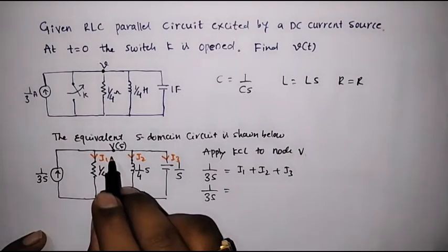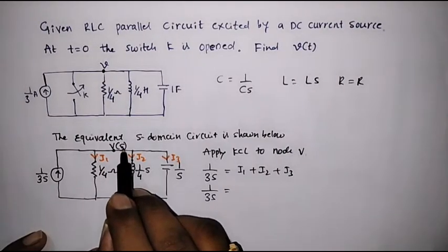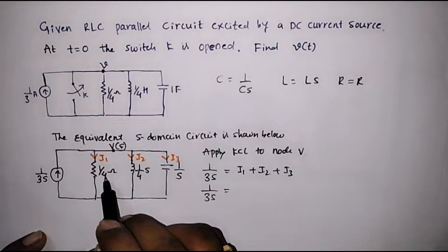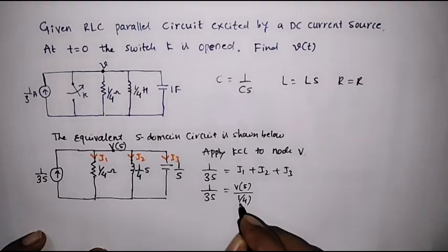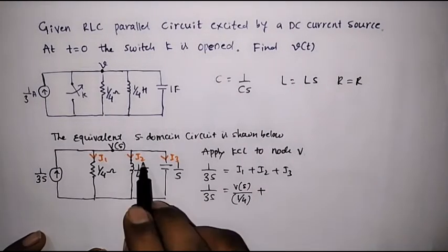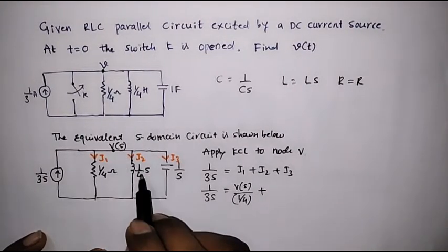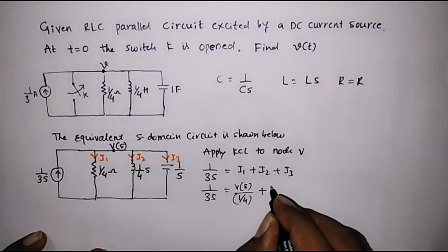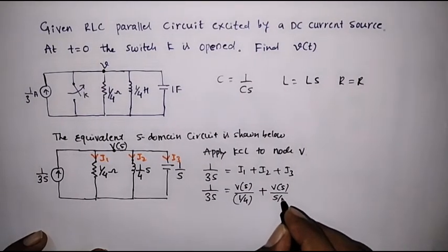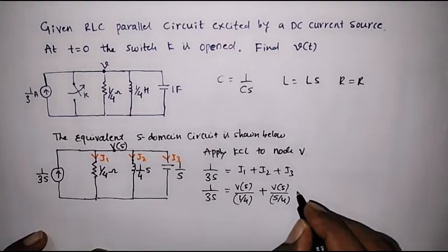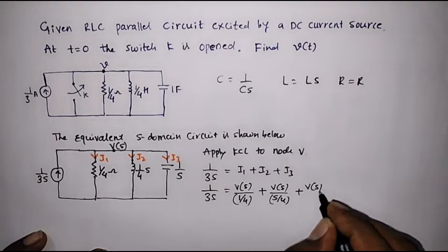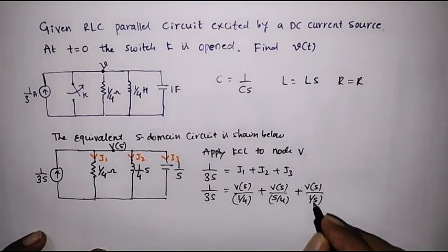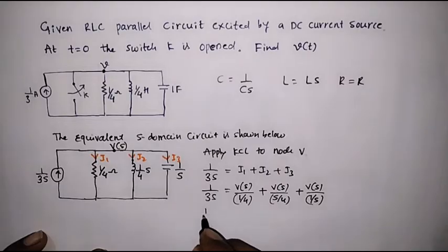So: 1 over 3S equals I1, which is V(S) divided by 1/4; plus I2, which is V(S) divided by S/4; plus I3, which is V(S) divided by 1/S. We will simplify this further.